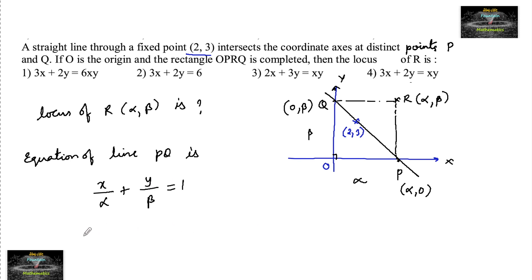And this line passes through (2,3) point. So which implies 2/α + 3/β = 1, which also implies here 3α + 2β = αβ.